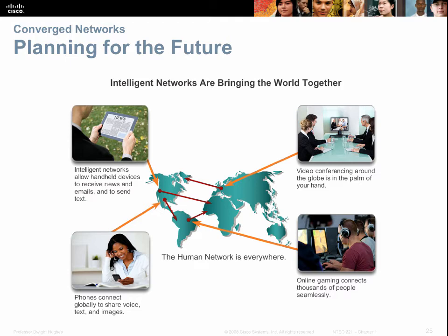Networks are moving into a new area called intelligent networks, where the network brings the data you want to you without you necessarily having to ask for it. You can see this on many mobile phones that make recommendations about where to eat based on GPS data and the time of day. A lot of these capabilities are coming to our computer systems where they make intelligent decisions about what data we would like to have and group that data for us.